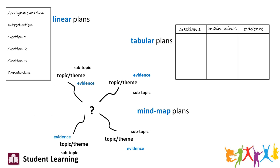The mind map plan takes a slightly different approach in that the main topic or theme is situated in the middle, and then around that, different subtopics and sub-themes are mapped, together with the evidence that will be used. No one approach is better than another, and different people find themselves more or less comfortable with different types of planning techniques. You might already have your own approaches that differ from these, but which you nevertheless find effective and work for you.